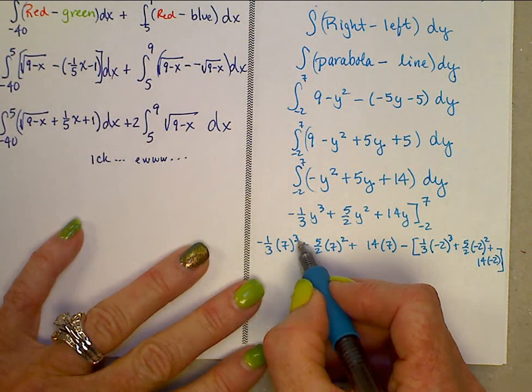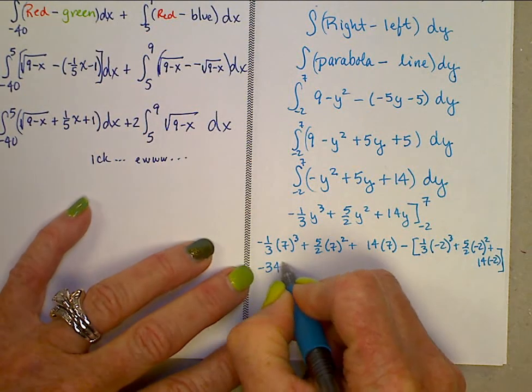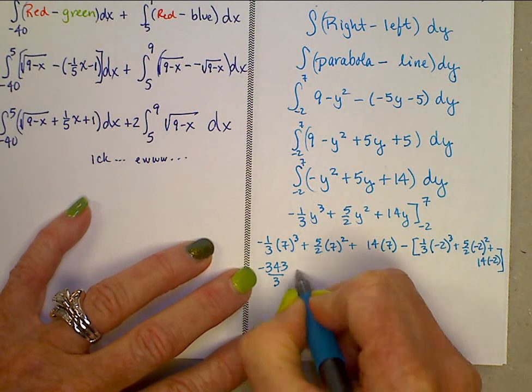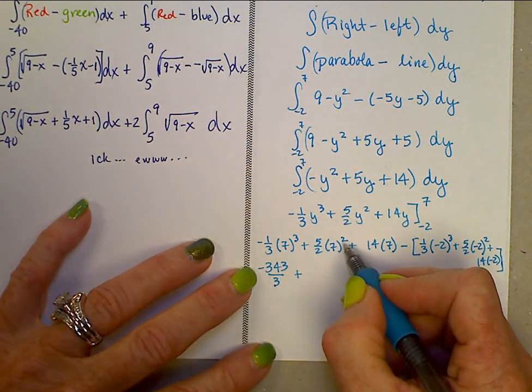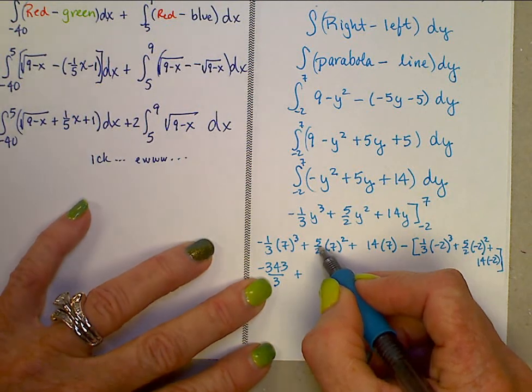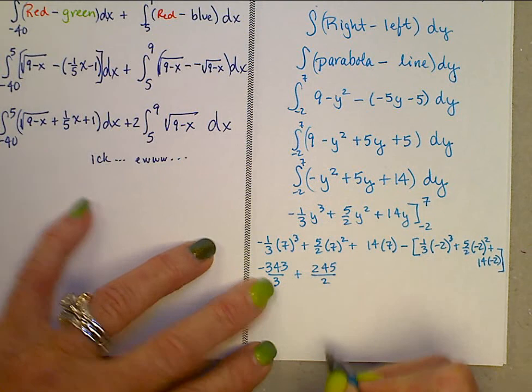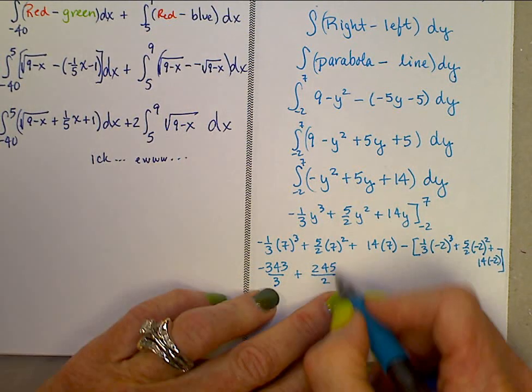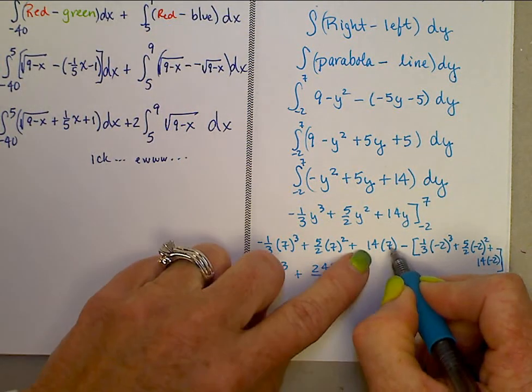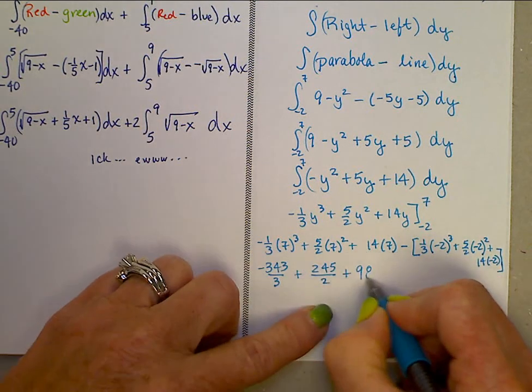And we're going to sub in here and we have negative one-third times 7 cubed plus five-halves times 7 squared plus 14 times 7. 7 cubed is 343, so this is negative 343 over 3 plus 7 squared is 49, 49 times 5 is 245 over 2 plus 14 times 7, that's 98.